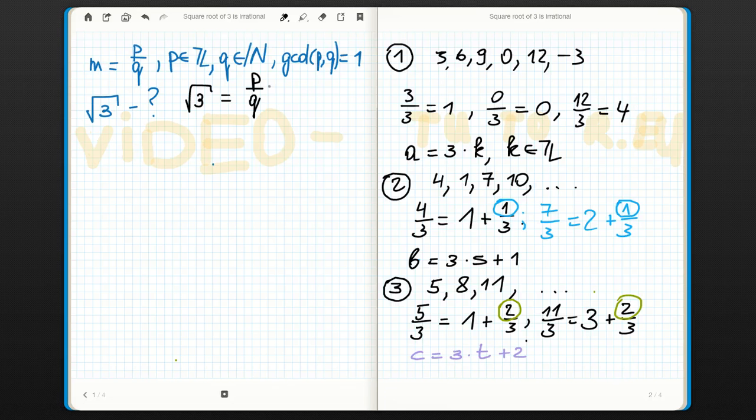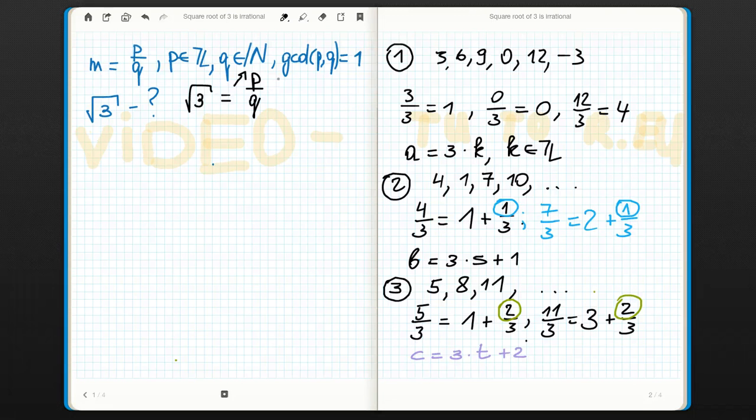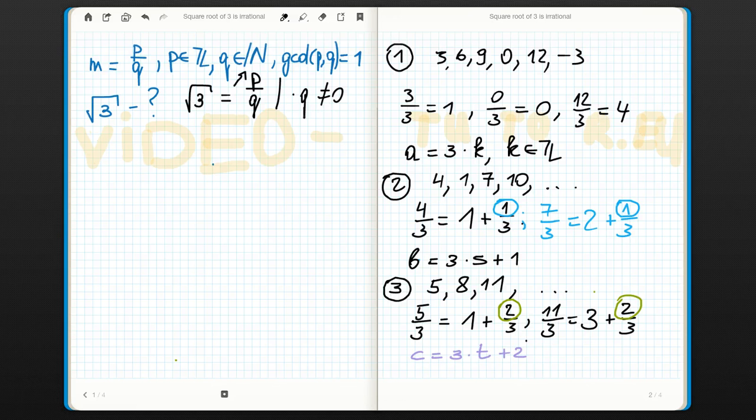Like we said before, and now we just do some algebra and multiply it times q, which is not 0 by the definition, because we allowed no 0 in natural numbers. So we have square root of 3 times q equals p.